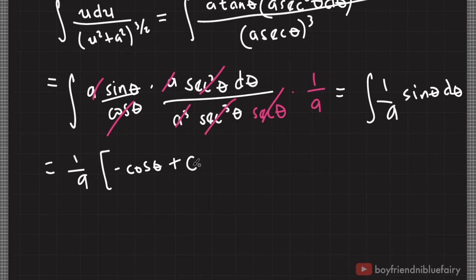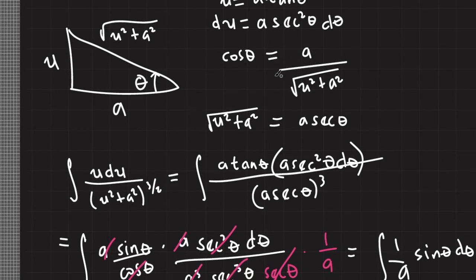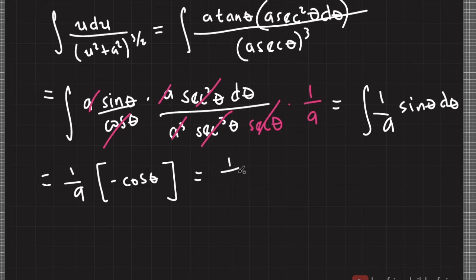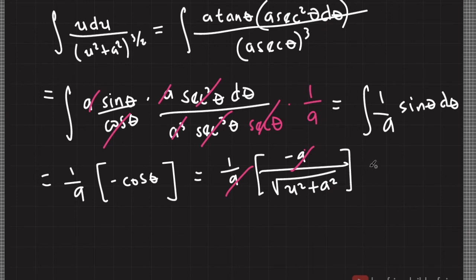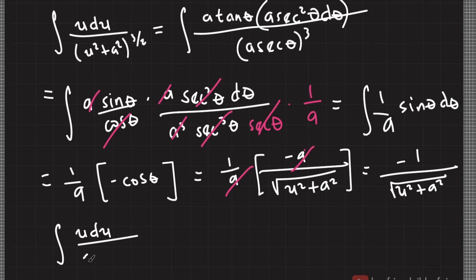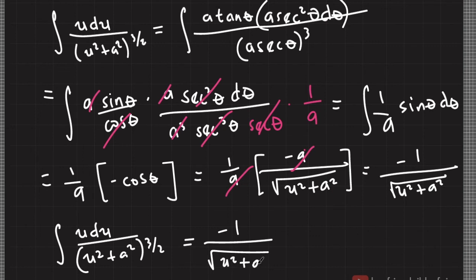We can assume that the constant of integration is just 0 since we don't have any initial or boundary conditions. Going back from the figure, cosine theta is equal to a divided by square root of u squared plus a squared. So we have 1 over a times negative a divided by square root of u squared plus a squared. The a's cancel out, and we end up with negative 1 over square root of u squared plus a squared. So the integral of u du divided by u squared plus a squared raised to 3 halves is equal to negative 1 over square root of u squared plus a squared.